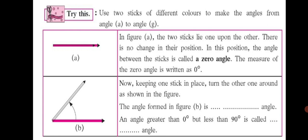Now try this activity. Use two sticks of different colors to make the angles from angle A to angle G. This activity is in your textbook page number 7. You can do it — if you don't have sticks, you can use two pencils. In figure A, the two sticks lie one upon the other with no change in position. The angle between the sticks is called a zero angle, and its measure is written as 0 degree.